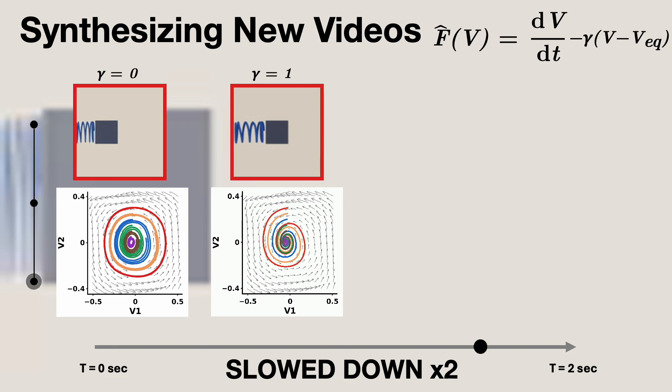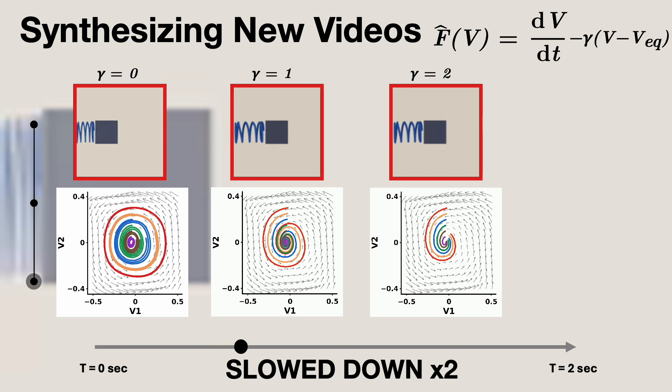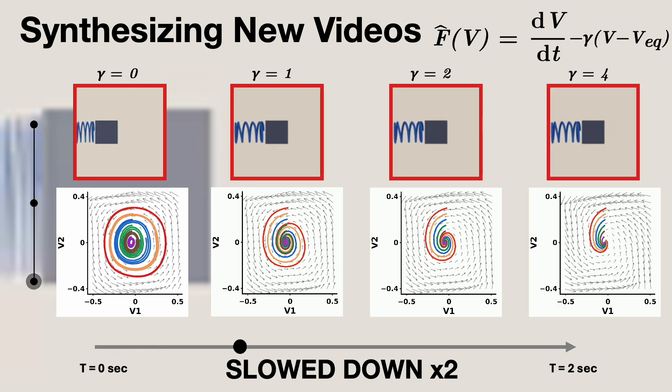we artificially construct dissipative dynamics by adding a damping term to the neural state vector field. By adjusting the damping factor gamma, we can control how quickly the system collapses to its stable equilibrium.